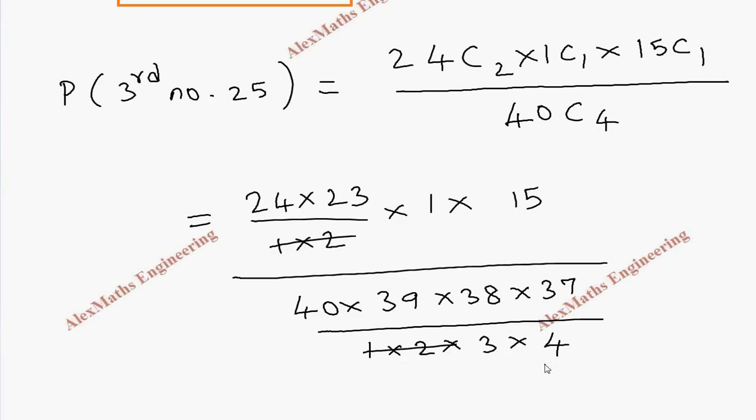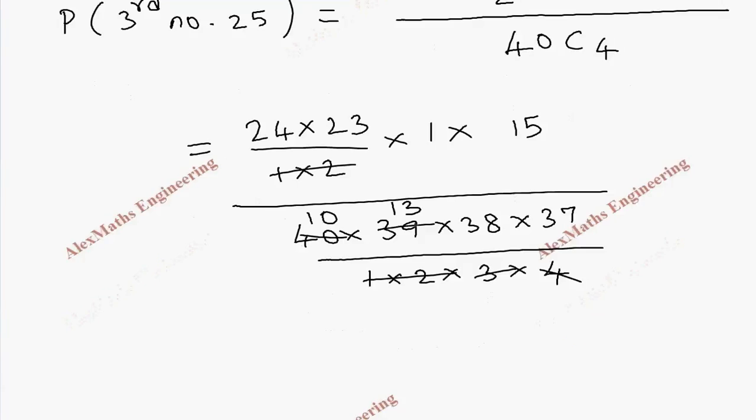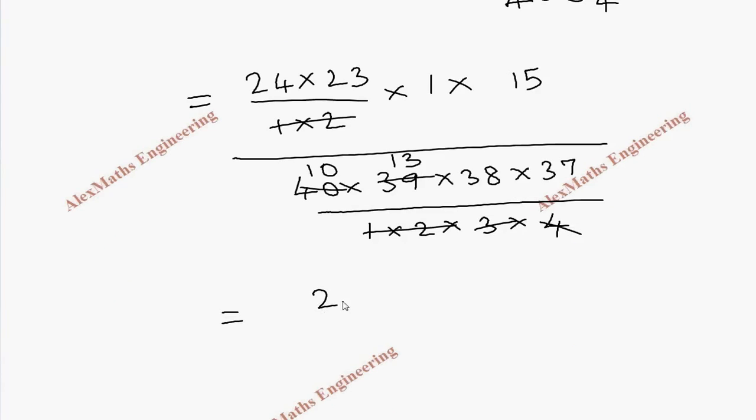We can cancel the common denominator here. This is 13 times and this becomes 10 times. Now the remaining numbers: 24 into 23 into 15, whole divided by 10 into 13 into 38 into 37. We can cancel with 5 table - this is 3 times, this is 2 times, 12 times this.